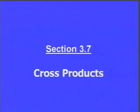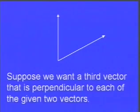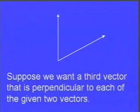We're actually going to learn three ways to do cross products, and you can choose the way that you like. Here's why we're doing cross products to start with: suppose we want a third vector that's perpendicular to each of two given vectors. We'd have a vector coming either out of the screen or going behind the screen.